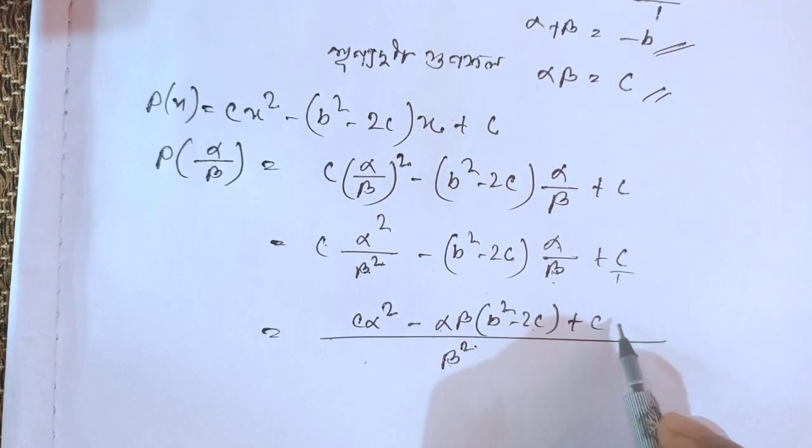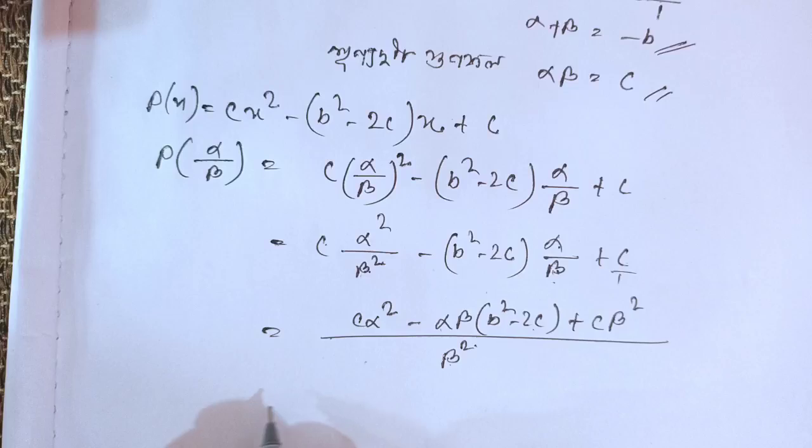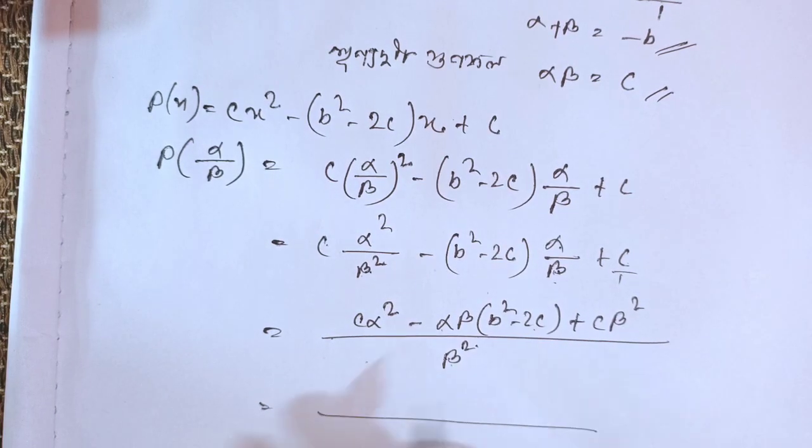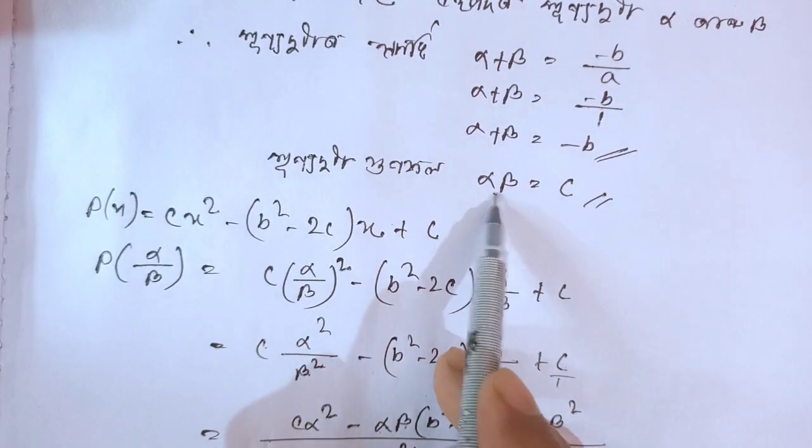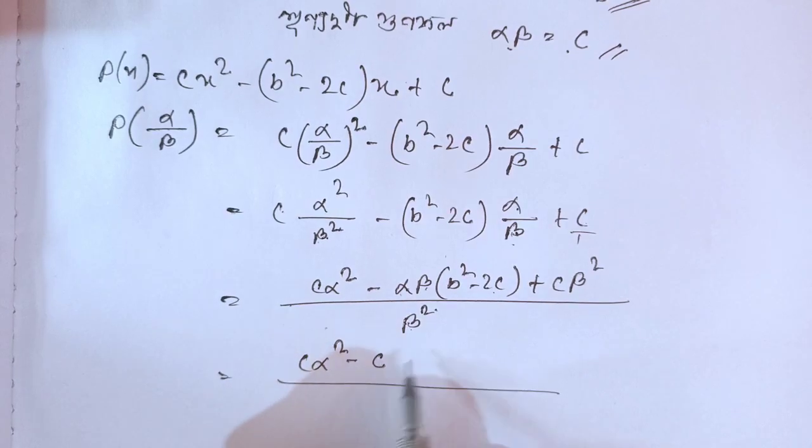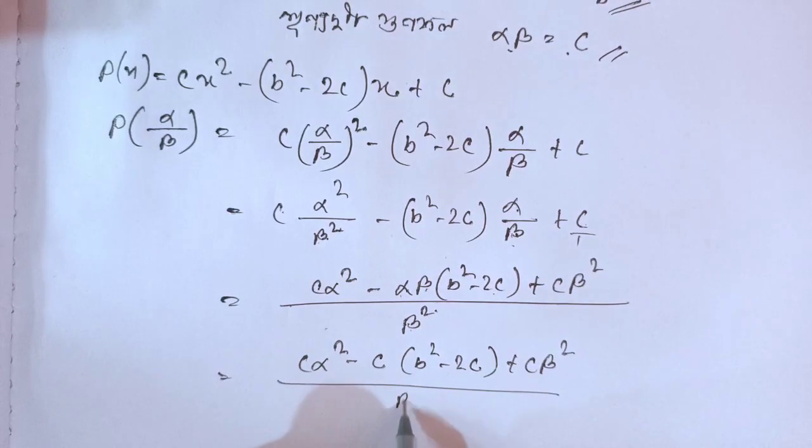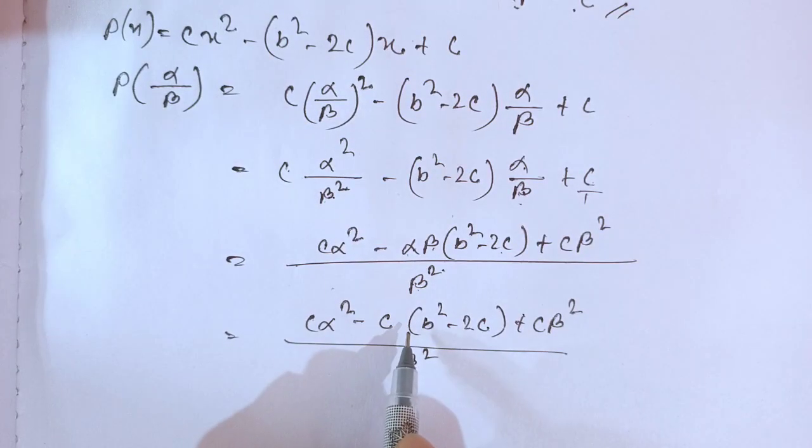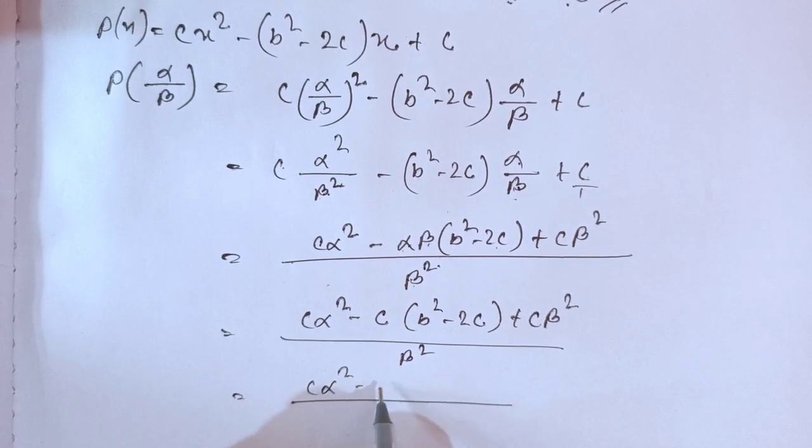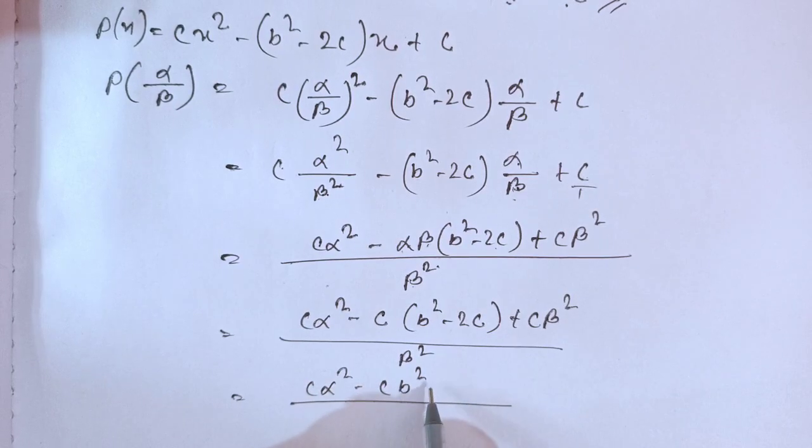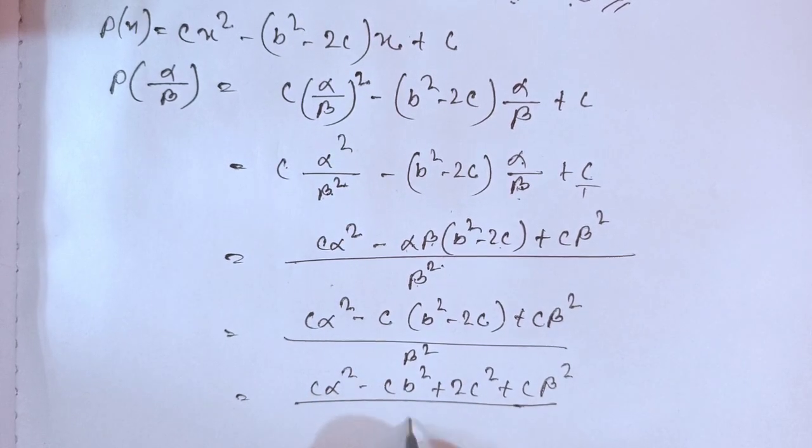Continuing: this equals [cα² - cβ² + 2cαβ + cβ²]/β². Which simplifies to [c(α² - β² + 2αβ + β²)]/β². Rearranging: [c(α² + 2αβ + β²)]/β².